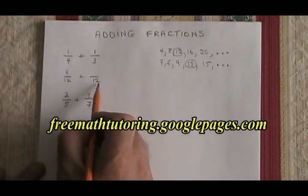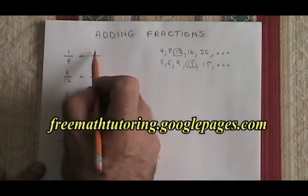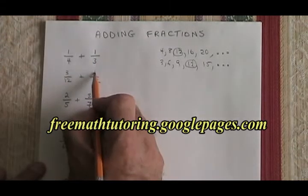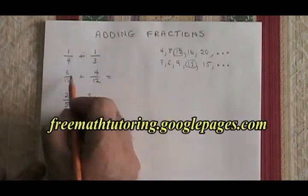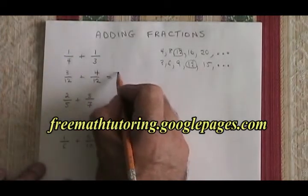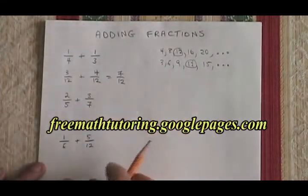If 3 is converted into 12 by multiplying it by 4, then the 1 on top has to also be multiplied by 4, and I have 4 twelfths. Now I can add 3 twelfths plus 4 twelfths equals 7 twelfths. I have my answer.